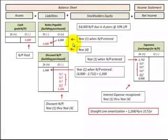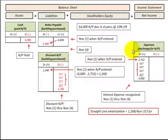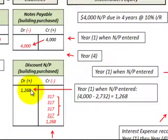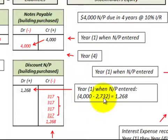Let's look at how we'd record a discount on notes payable. Notes payable is a liability on the balance sheet, and its associated discount would be a contra-liability. The expenses the notes payable generated would be part of net income on the income statement. At the beginning of year one, we would credit notes payable by $4,000, and the discount on notes payable would be $1,268 — the $4,000 payment at end of year four less the present value of $2,732.